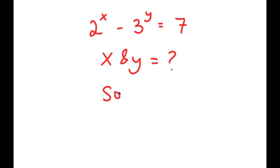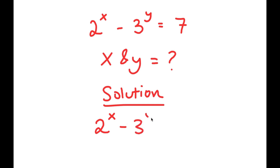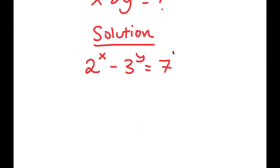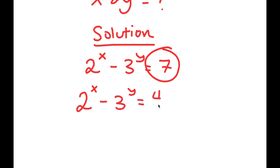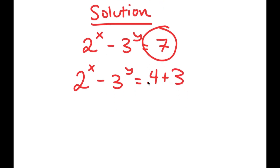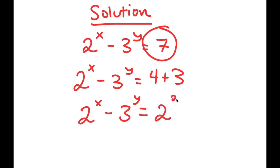For my solution, if I have something in the form 2 to the power of x minus 3 to the power of y is equal to 7, I'm going to rewrite 7 as 4 plus 3. So now I have 2 to the power of x minus 3 to the power of y is equal to 4 plus 3. The reason I did this is because 4 is the same thing as 2 squared, so now I get 2 squared plus 3.